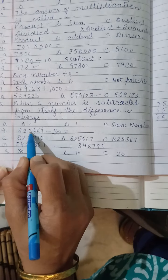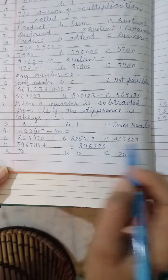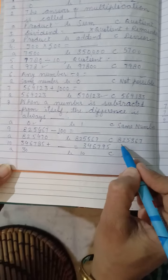Then 8, 2, 3. 8, 2, 5, 3, 6, 7. This is the correct answer for it.